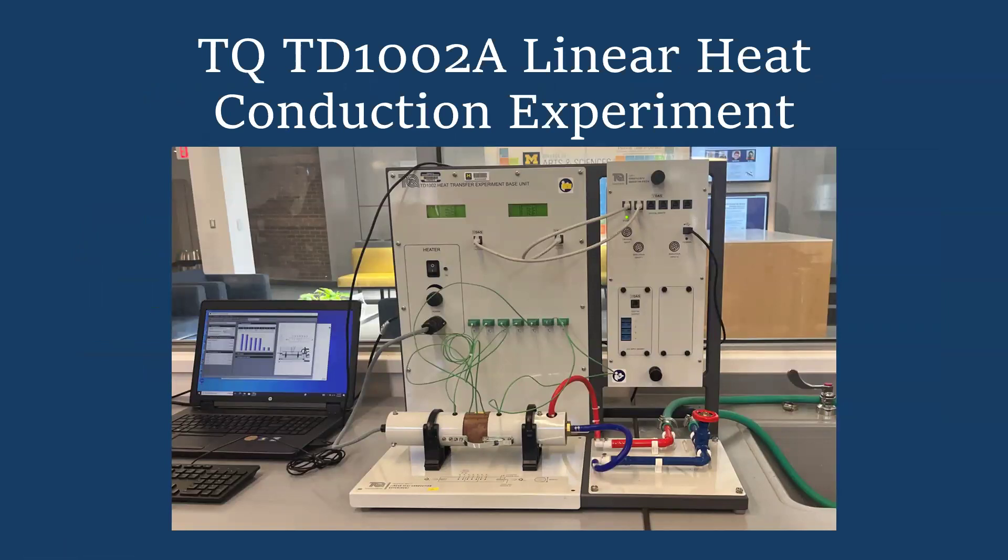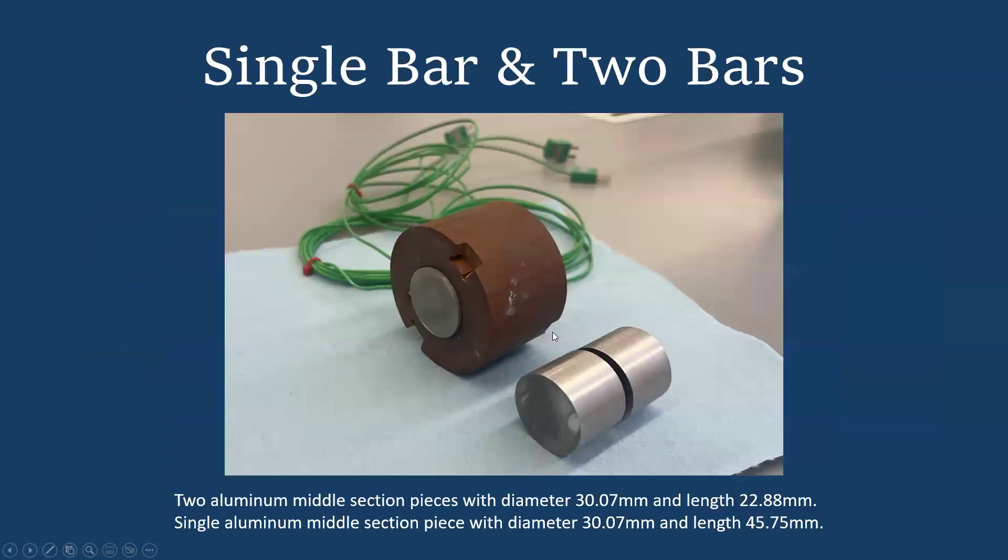We used a TD1002A machine to run our experiment where we were able to swap out this middle piece here and put in a single solid bar of aluminum and two individual bars of aluminum. We were able to read the temperatures using the thermocouples and adjust the power here using the dial. Here's a picture of the casing with the solid bar of aluminum in it and the thermocouples attached and the two separate pieces of aluminum in front of it.